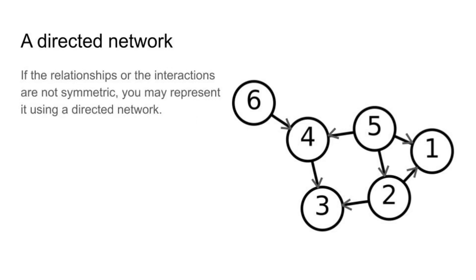There might be occasions when you would want to represent interactions that are not symmetric — that is, if A is associated with B, B does not have the same association with A. For this, you use a directed network. As you see now, our original network has been changed slightly, and the edges now have directions. The directions represent the way in which the interaction is performed. You might even have two links between two nodes, each going from A to B and another one going from B to A, with different properties, thus representing a non-symmetric interaction.